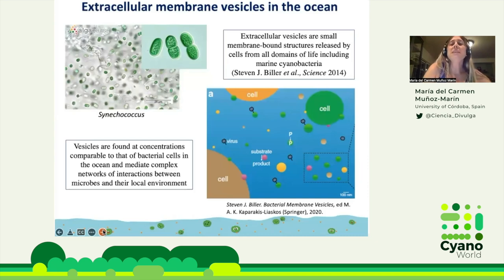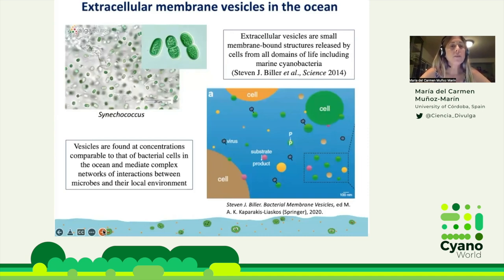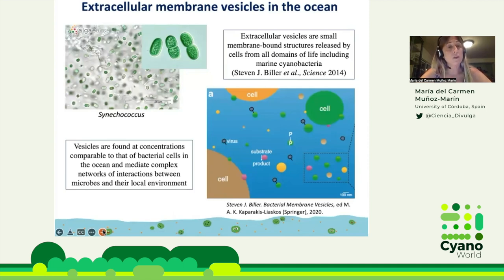Extracellular vesicles are small membrane-bound structures released by cells from all domains of life, including marine cyanobacteria. These vesicles are found at concentrations comparable to that of bacteria cells in the oceans, like 10^6 vesicles per milliliter, or around 10^5 vesicles per milliliter, depending on the ocean, amid complex networks of interactions between microbes and their local environment.